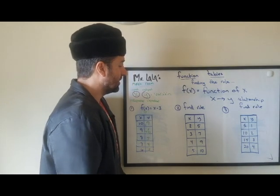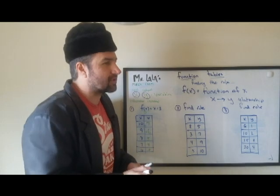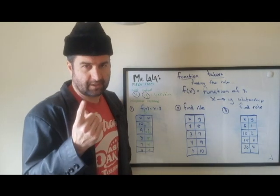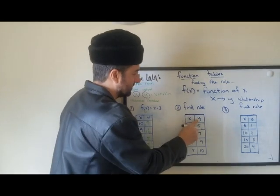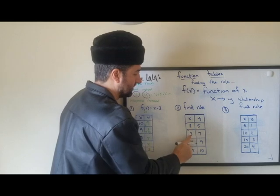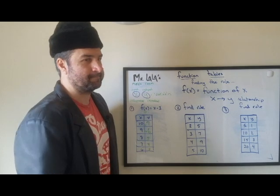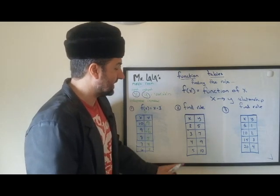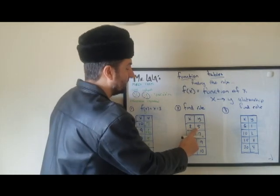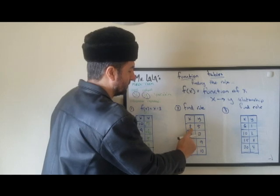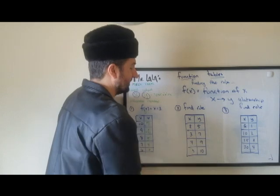Now we don't have the rule — we have to find it. It is hiding, and believe me, nobody hides from Dmitry. Here is X to Y: 2 goes to 5, 3 goes to 7, 4 goes to 9, 5 goes to 10. Hmm, very tricky. Actually I see an error, but we'll talk about that later. Let's try 2 times 2 — that gives 4, not 5. 3 times 2 is 6, not 7. 4 times 2 is 8, not 9.